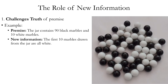Let's look at the role of new information in assessing inductive arguments. There are two main things new information can do. First, new information can challenge the truth of a premise — it can make one of the premises less probable. Example: premise — the jar contains 90 black marbles and 10 white marbles; new information — we draw 10 marbles at random and they're all white. This new information does not absolutely guarantee the premise is false, but it does make it less probable.